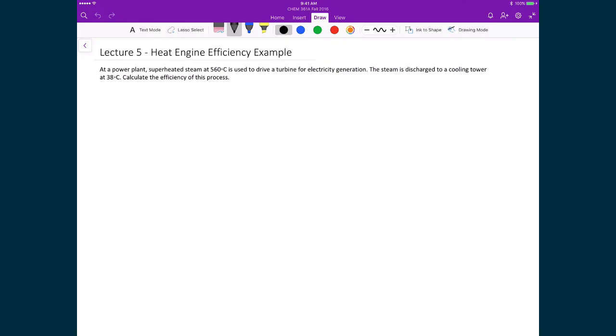Let's use this on a real world example so we get practice calculating efficiency values for heat engines. At a power plant, we have superheated steam at 560 degrees Celsius used to drive a turbine for electricity generation. The steam is then discharged to a cooling tower where it's at 38 degrees Celsius. We're supposed to calculate the efficiency for this process.